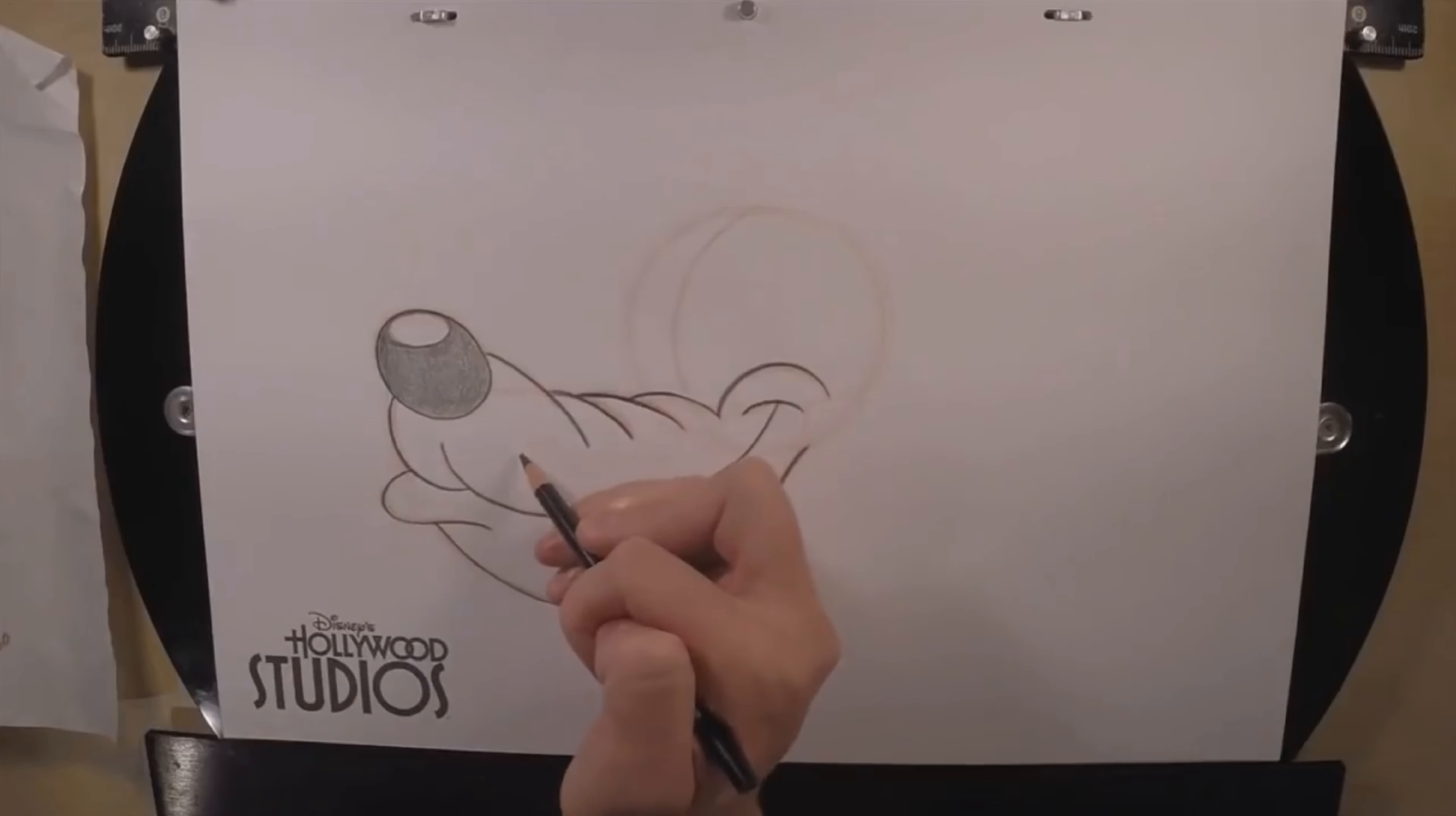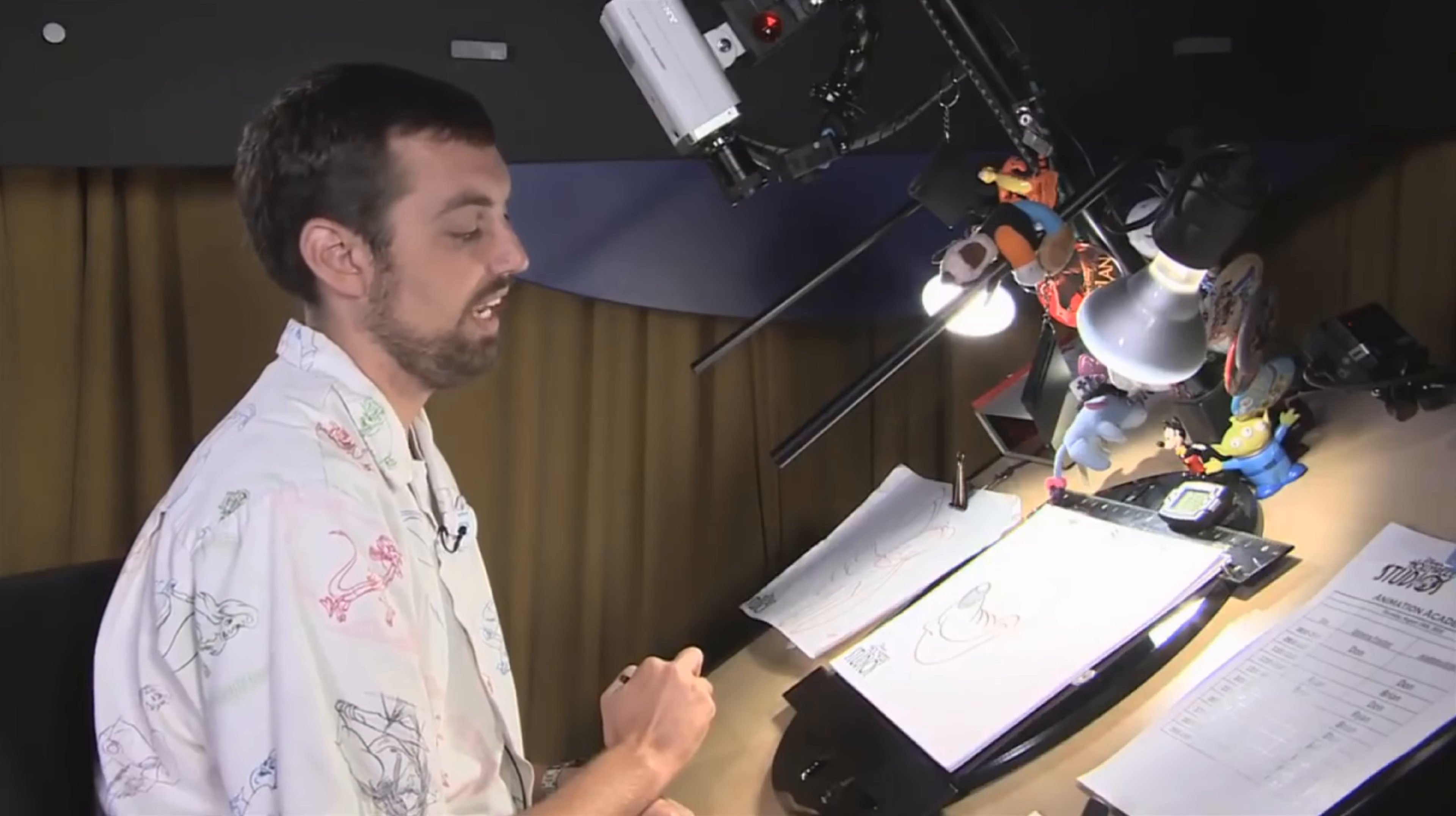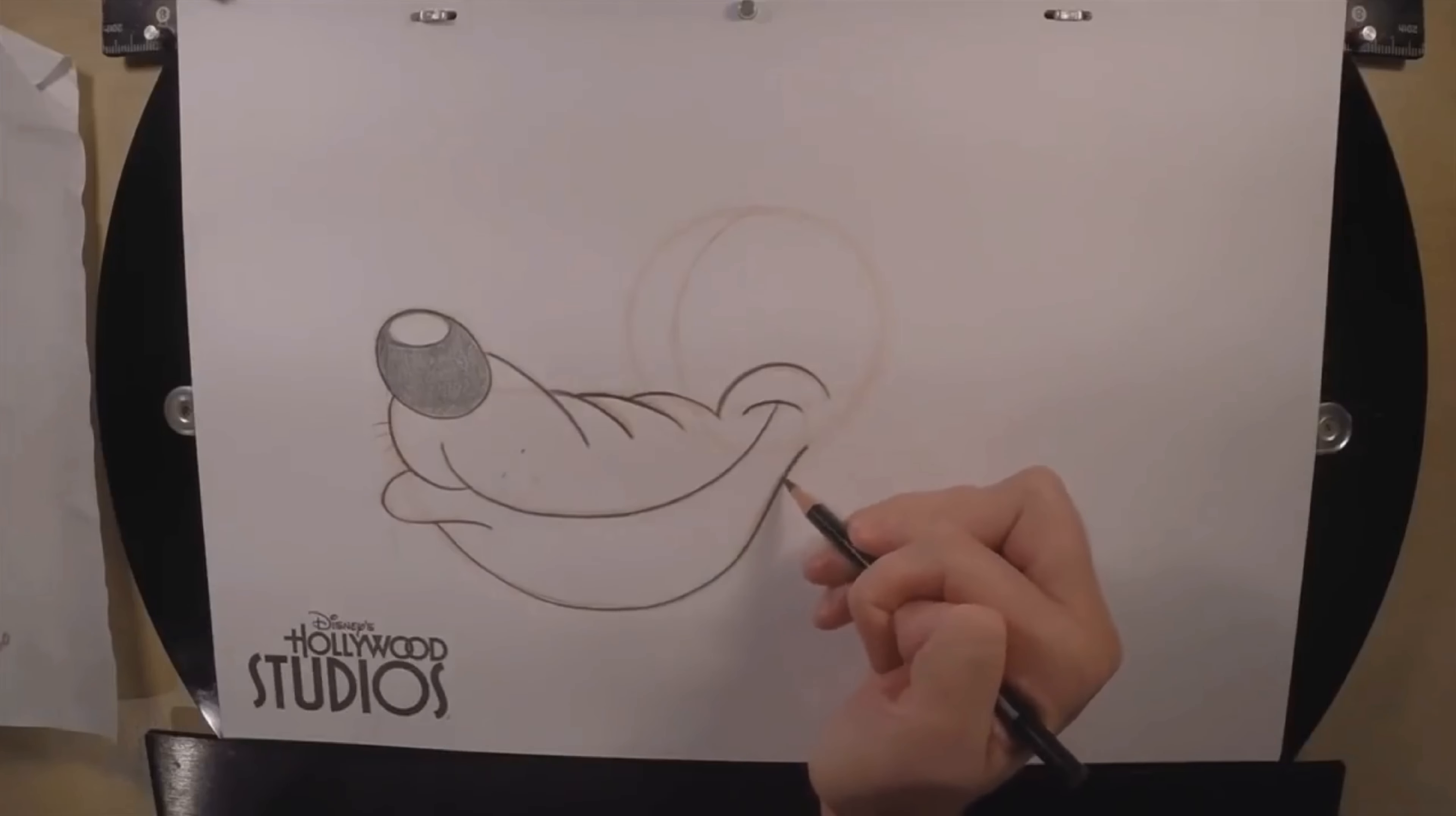Let's give him some whiskers. Some little dots in there, short little hairs on the ends. Make sure they're short, it's a dog, not a cat. Pluto is actually a bloodhound.